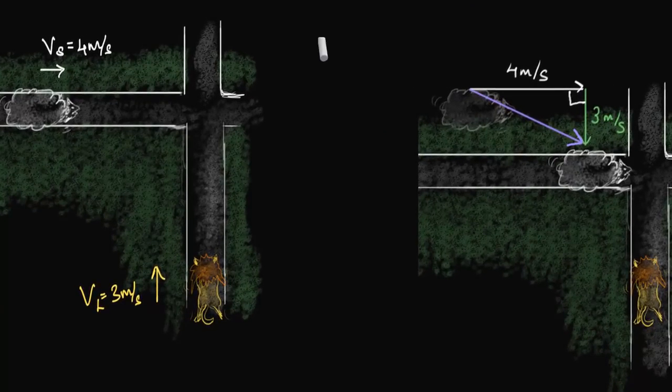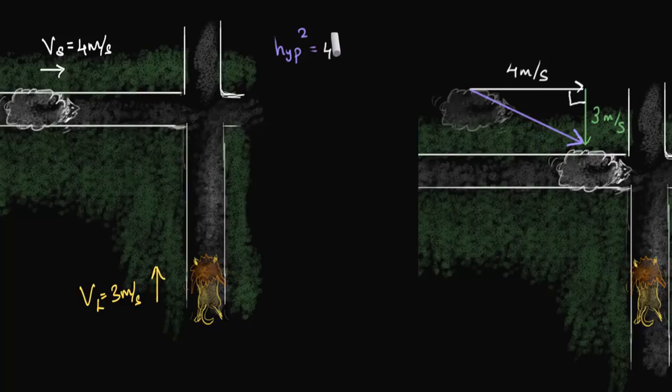So we could say the hypotenuse squared, the Pythagorean theorem says the hypotenuse squared is equal to the sum of the squares of the other two sides. So that should be equal to 4 squared plus 3 squared. That gives us 16 plus 9, which is 25. Or the hypotenuse turns out to be the square root of 25, which is just 5.